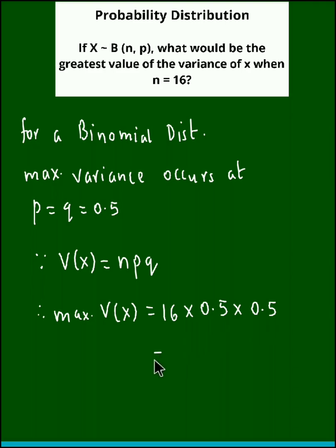Now the value for n here is 16, so 16 into 0.5 into 0.5. If we simplify this, we obtain the maximum variance as 4. So this is the maximum variance at n equal to 16.